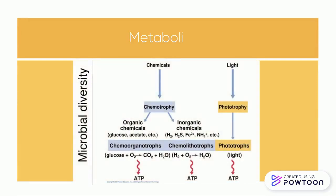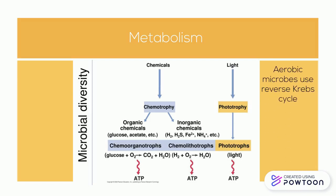Most Crenarchaeota are obligate anaerobes. They get their energy from sulfur and carbon dioxide, which makes a majority of these microbes chemo-organotrophic and chemo-lithotrophic. However, some are aerobic and use a reverse Krebs cycle as their source of energy. And as previously mentioned, there are marine Crenarchaeota that perform nitrification and have a role in the ocean's nitrogen cycle.